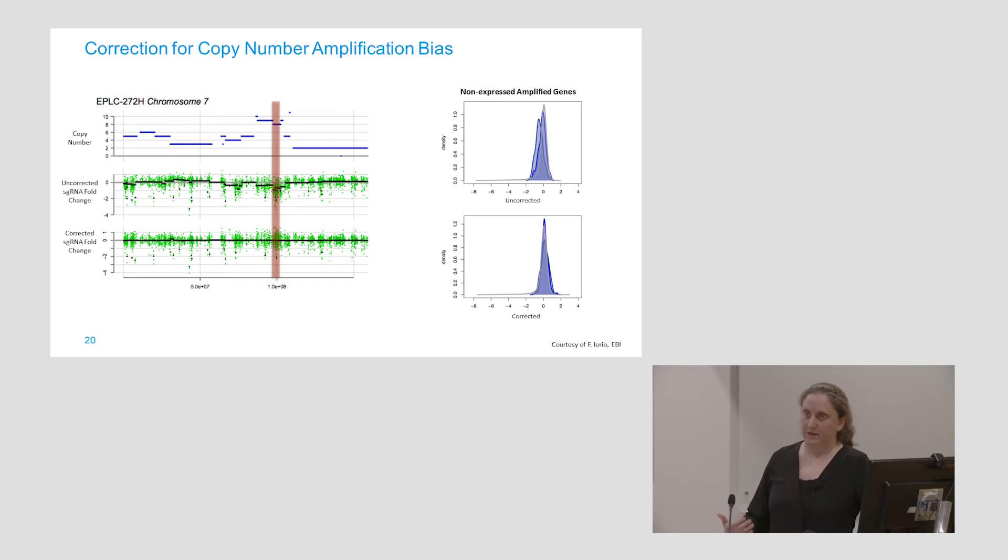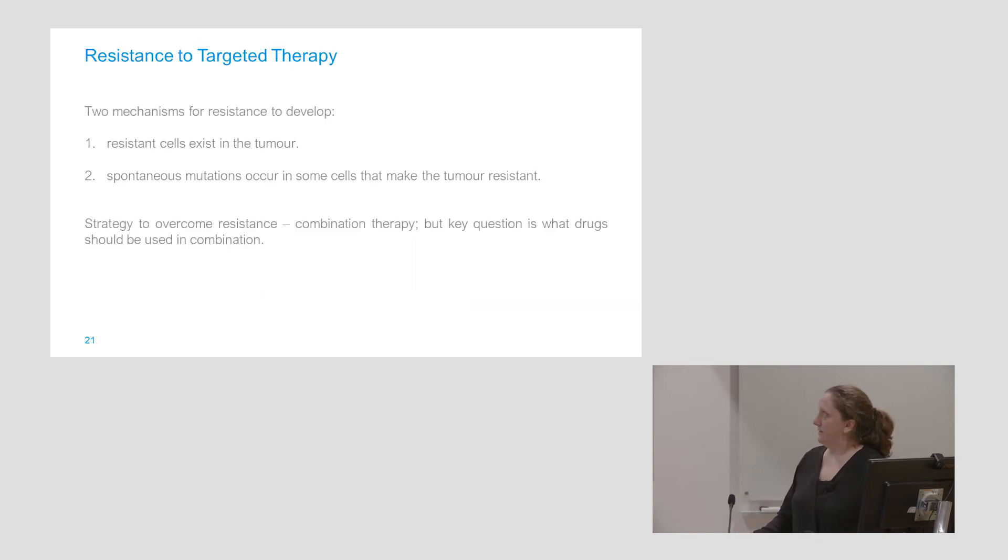I said at the start targeted therapy is great, but there is some issues with it. Resistance can develop to targeted therapy. It can be because of the heterogeneous nature of a tumour. You might have a subset of the tumour that just has a second or third mutation that makes it resistant to your drug. Or cancer cells, it's a really genetically unstable environment. They'll pick up extra mutations and they might acquire resistance.